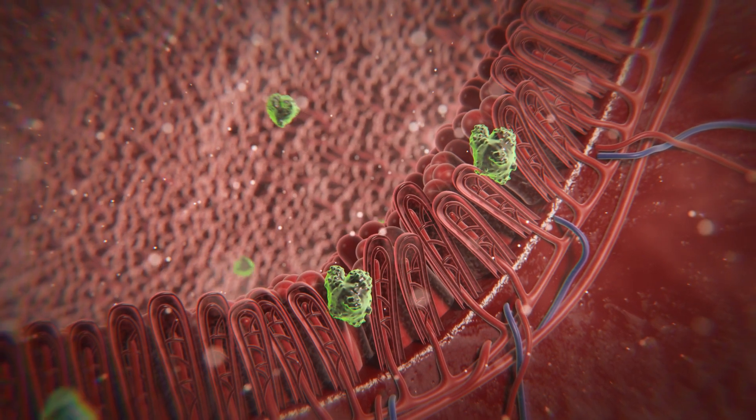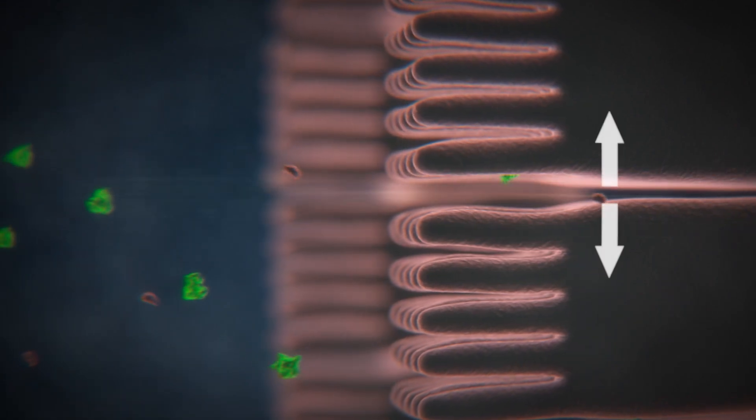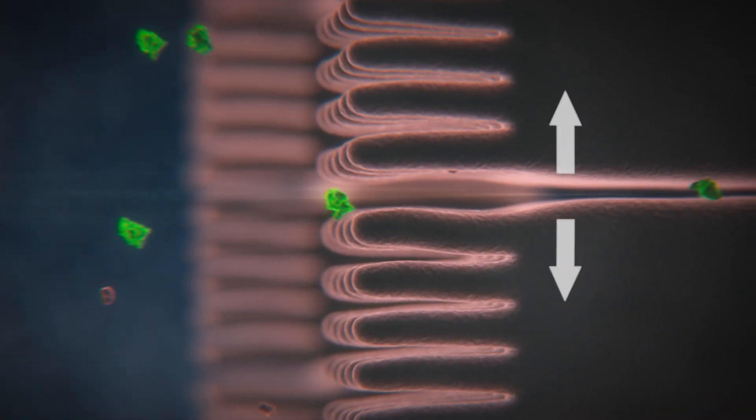These often result in an increased permeability of the intestinal wall, the so-called leaky gut syndrome, which describes a weakening of the cell connections, the tight junctions.